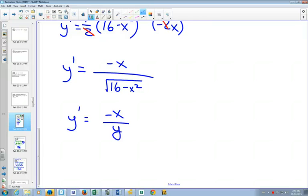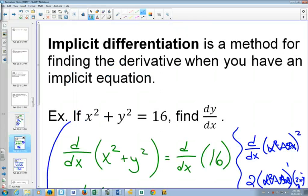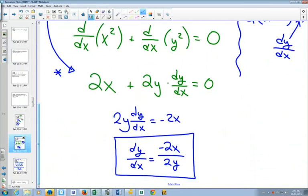Now, if we look at what we found with our implicit differentiation, we got negative 2x over 2y. You can see that you could have simplified the 2's and got negative x over y.